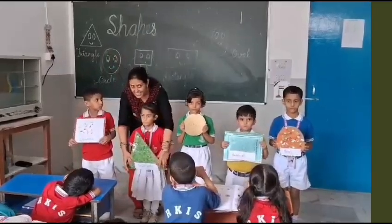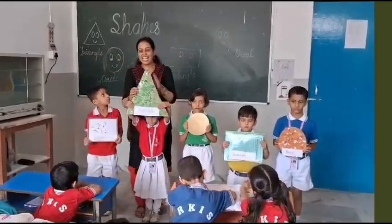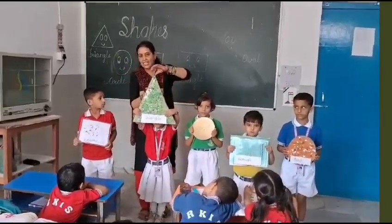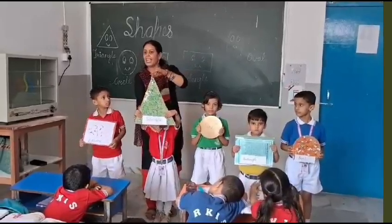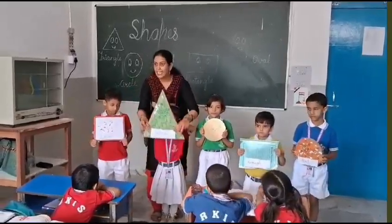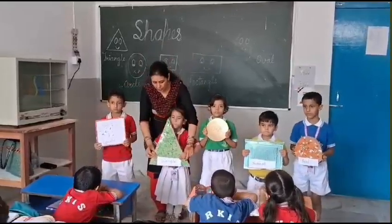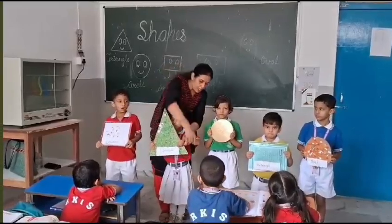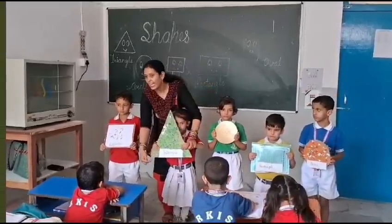Next one is triangle. Triangle has three sides. One, two, and three. How many sides in the triangle? Three. Very good. And also three corners. One, two, and three.